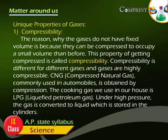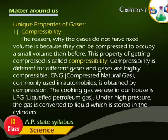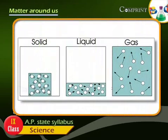Unique Properties of Gases: Compressibility. The reason why gases do not have fixed volume is because they can be compressed to occupy a smaller volume than before. This property of getting compressed is called compressibility. Compressibility is different for different gases, and gases are highly compressible.